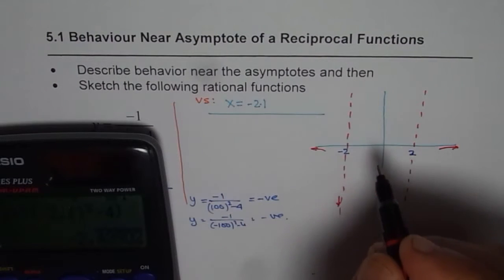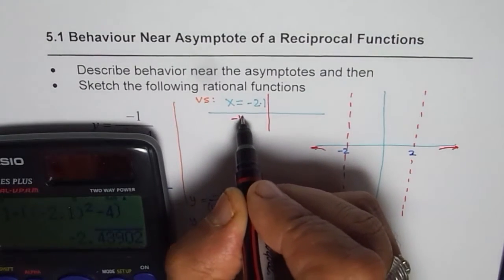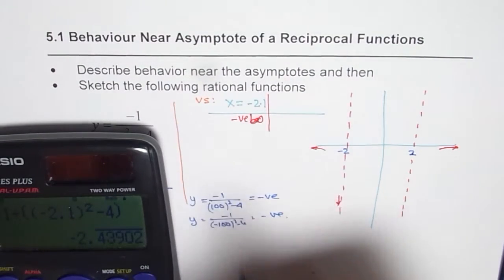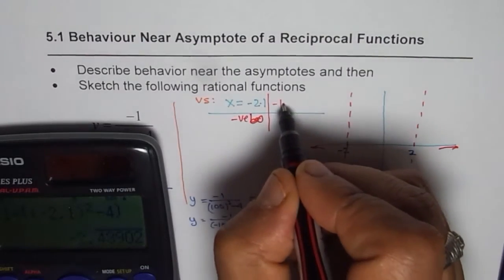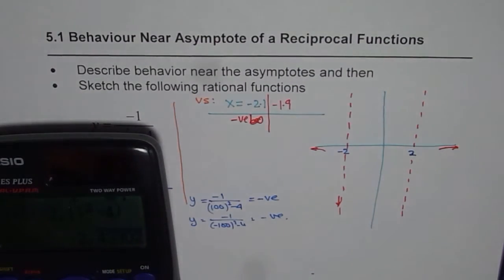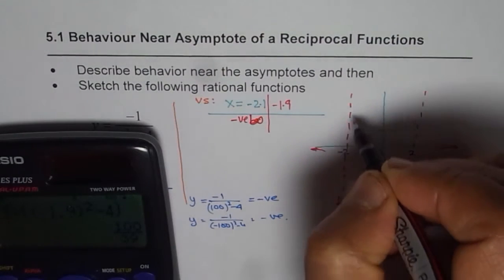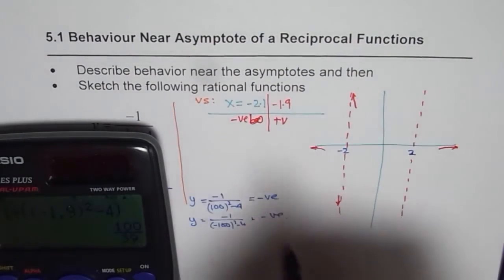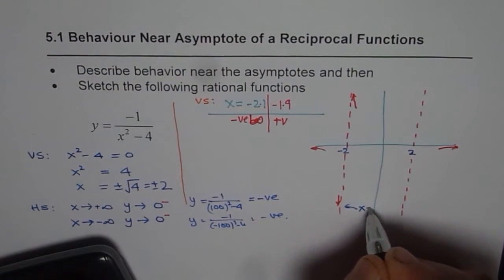If we substitute a value slightly greater than -2, say x = -1.9: y = -1 / ((-1.9)² - 4). That gives a positive value. So on the right side of the asymptote at x = -2, we get positive infinity. So the behavior near the vertical asymptote x = -2: approaching from the left gives negative infinity, approaching from the right gives positive infinity.